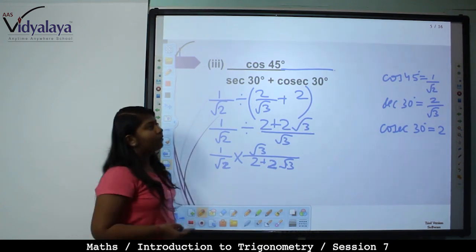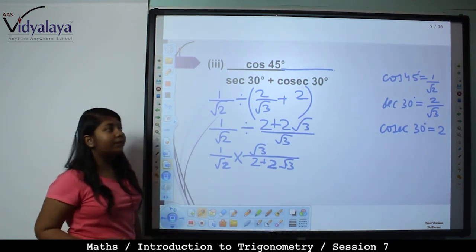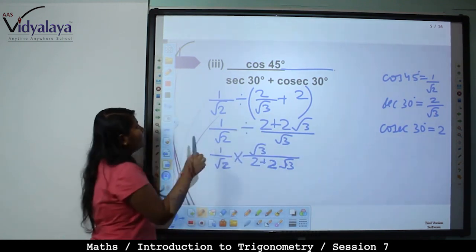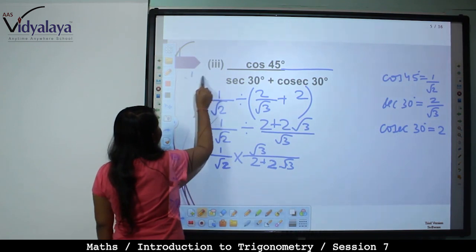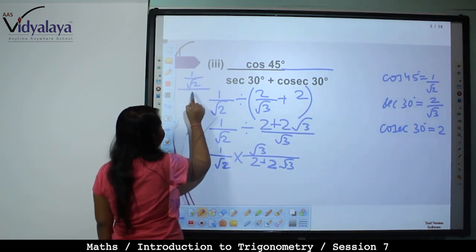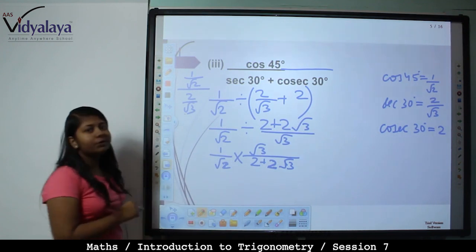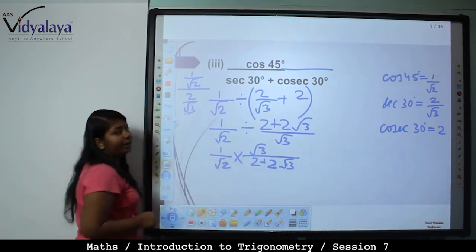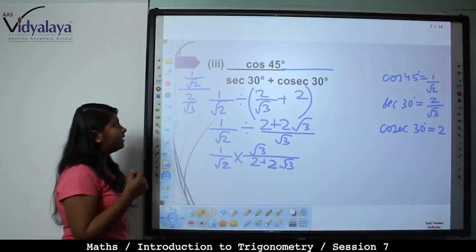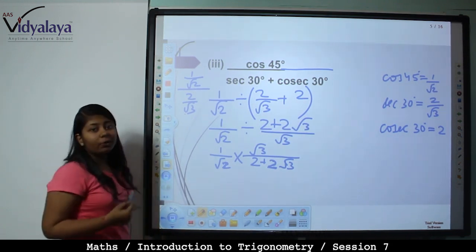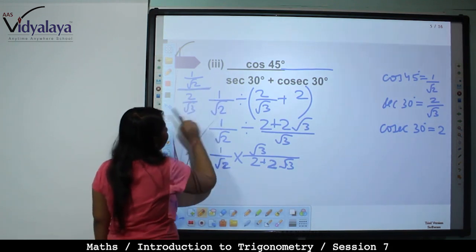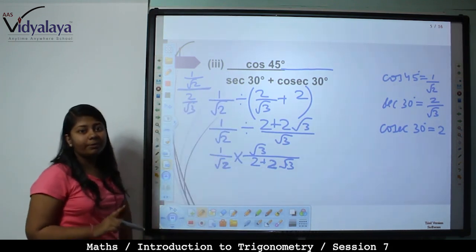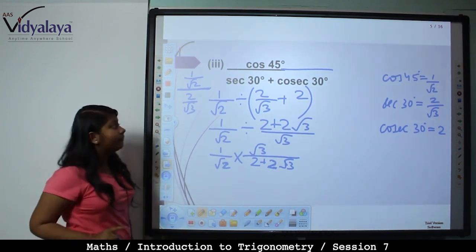Now substitute the values: 1 by root 2 divided by (2 by root 3 plus 2). Many students get confused with fractions in division. You can also use the division sign — as long as your answer is correct, both notations work.